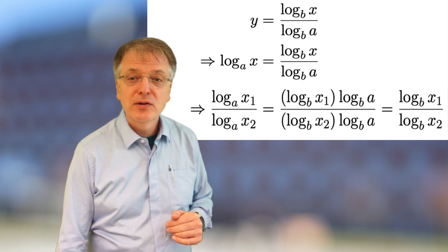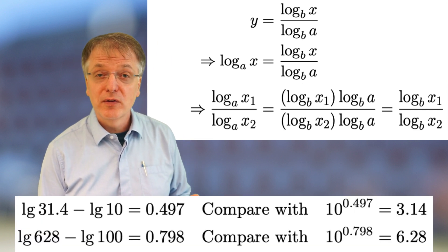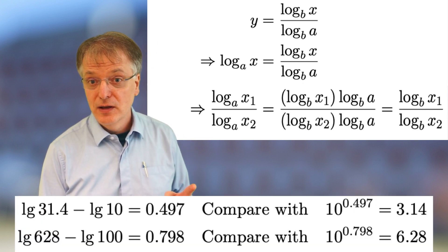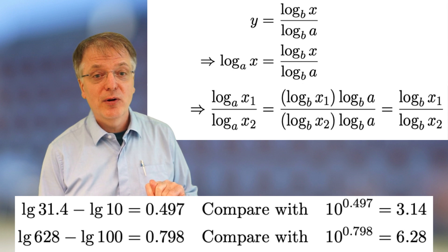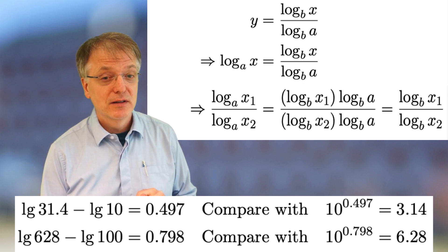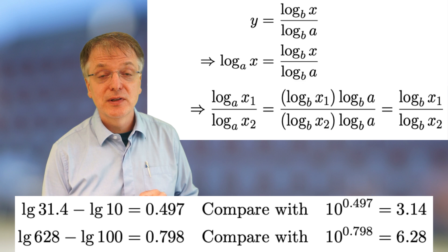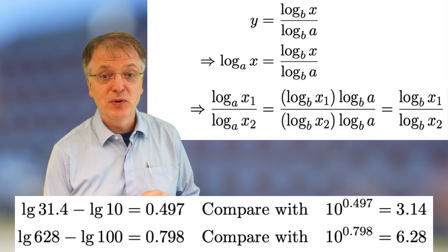By the way, regarding the results we got for 31.4 and 628, note that 10 to the power of 0.497 is 3.14 and 10 to the power of 0.798 is 6.28.